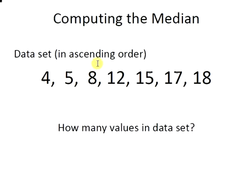How many values are in the data set? Well there are actually 7 values. And just as a remark, 7 is an odd number, that's important.